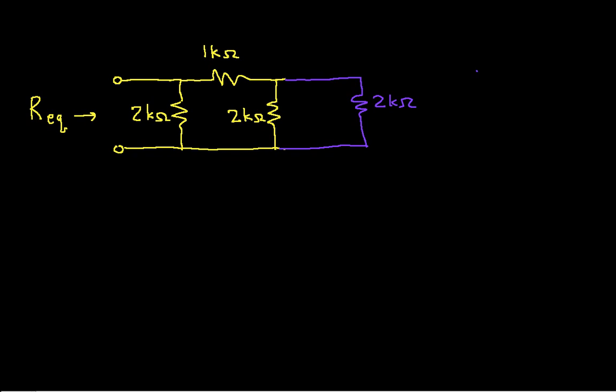If I now look for things that I can combine, again, I find that I have this 2k ohm resistor and this 2k ohm resistor in parallel. So without repeating the computations that I just did for two 2k ohm resistors in parallel, I would have the equivalent resistance here of 1k ohm.